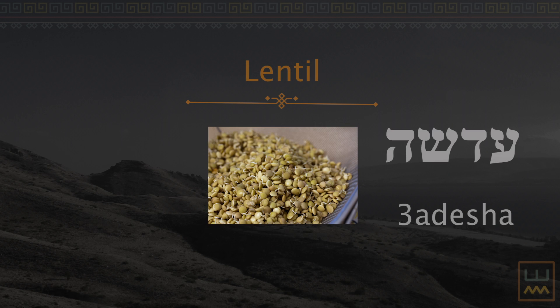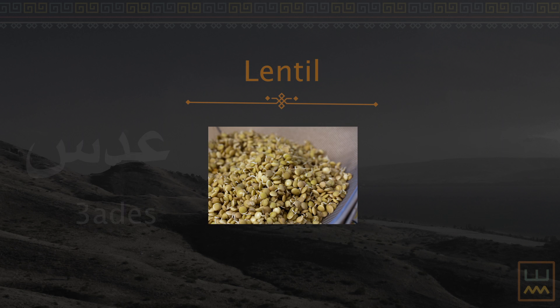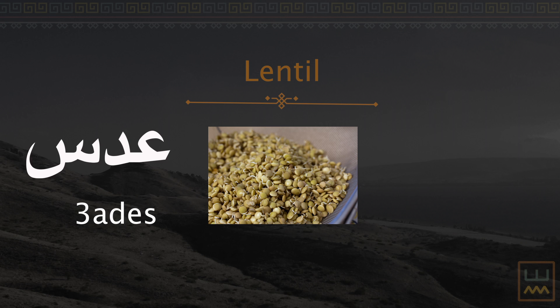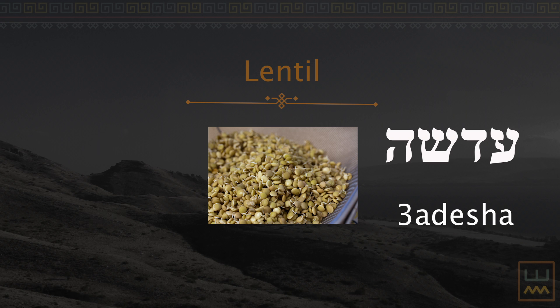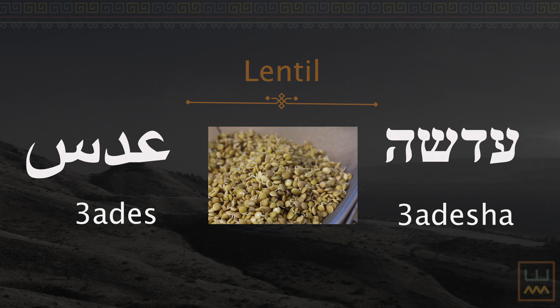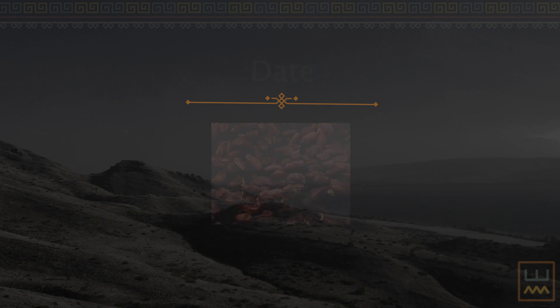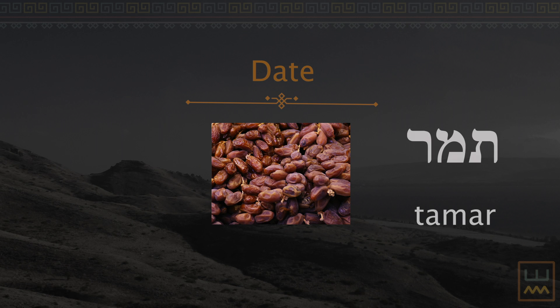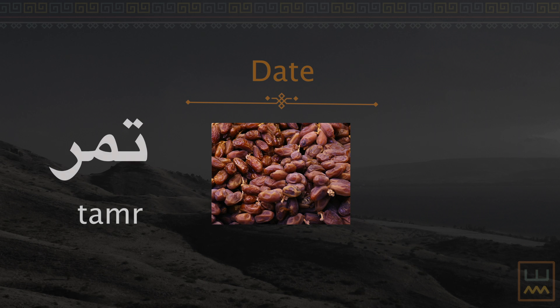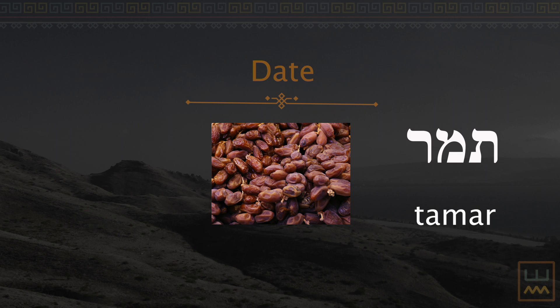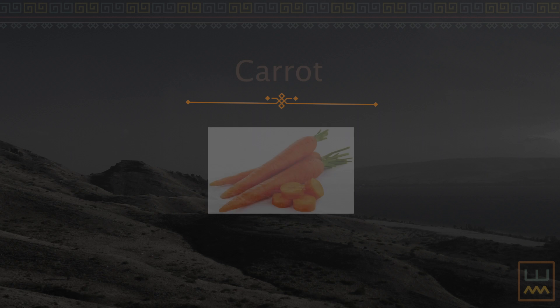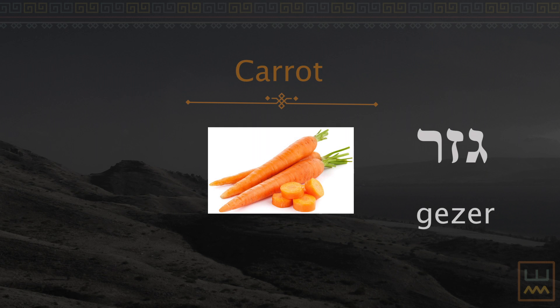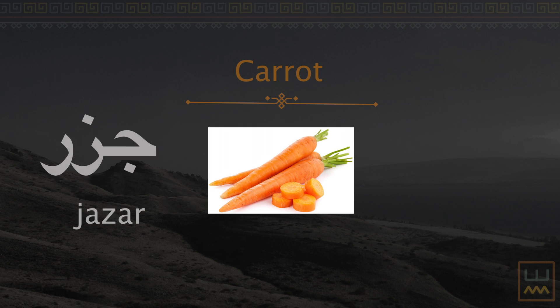Lentil: Adisha (Hebrew), adis (Arabic). Dates: Tamal (Hebrew), tamir (Arabic). Carrot: Gezil (Hebrew), jazar (Arabic).